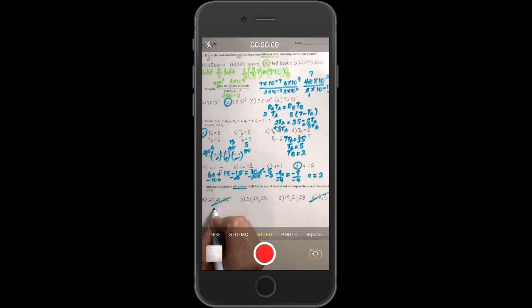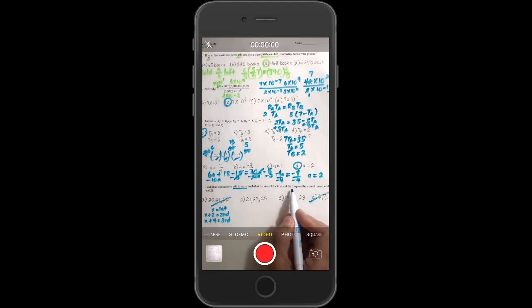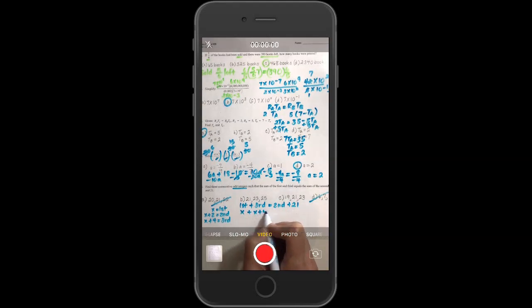Now when we actually set these up, we say X equals the first. And if they're even or odd, X plus two equals the second. X plus four equals the third. So it says the sum of the first and third equals the sum of the second and twenty-one. So first plus third equals second plus twenty-one. And so we would have X plus X plus four equals X plus two plus twenty-one.